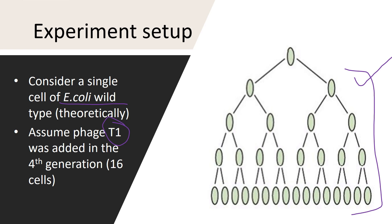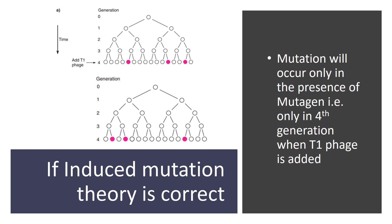Now, considering that the induced mutation theory is correct — that mutation can occur only in the presence of the mutagen — the mutagen here is the T1 phage, which is added only in the fourth generation. So mutation should occur only in the presence of the T1 phage, meaning mutation cannot occur in the first, second, or third generation.